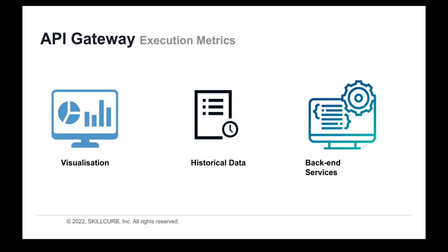How do we gauge the performance of our API Gateway? There are a few execution metrics we can monitor to ensure good operation. The first is visualization — you can get a high-level overview of usage with charts and graphs, access out-of-the-box reports, and create your own custom dashboards. You also have historical data, where you can see how well your API service is performing over a longer period of time with flexible data retention schedules. Lastly, you have backend services — you can correlate API execution metrics with data from backend services like Amazon EC2 and AWS Lambda to get the complete picture.